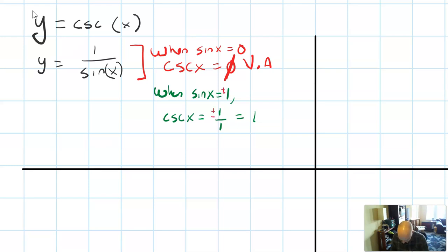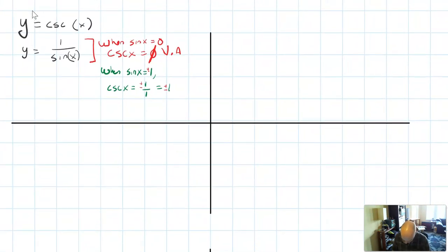That's also true with positive and negative 1. So establishing the asymptotes and the 1 values are probably the most important part of the graph of cosecant.